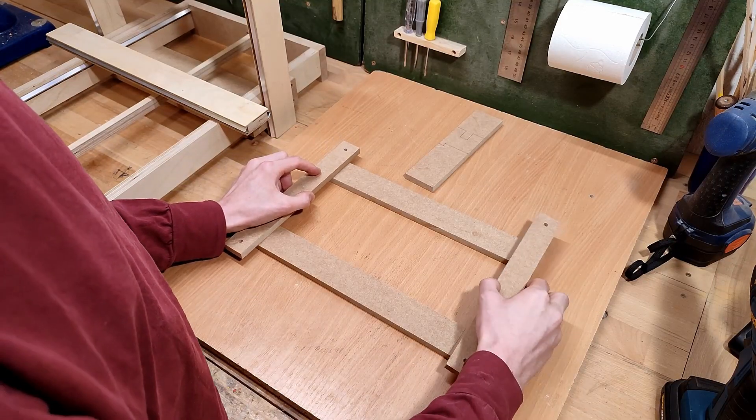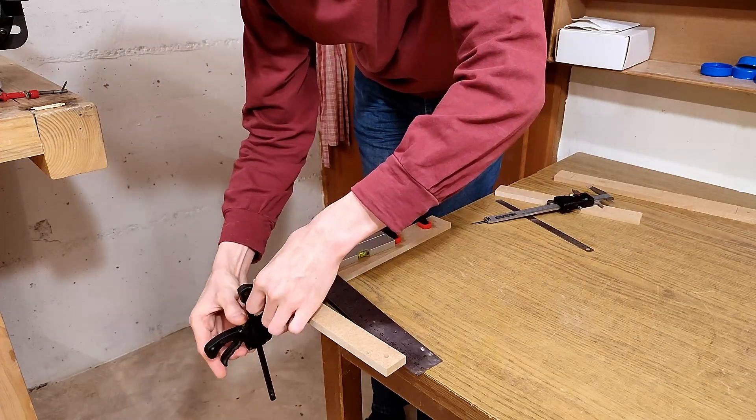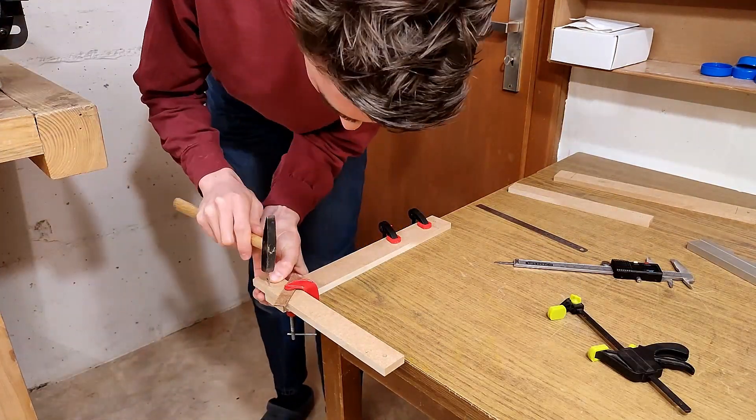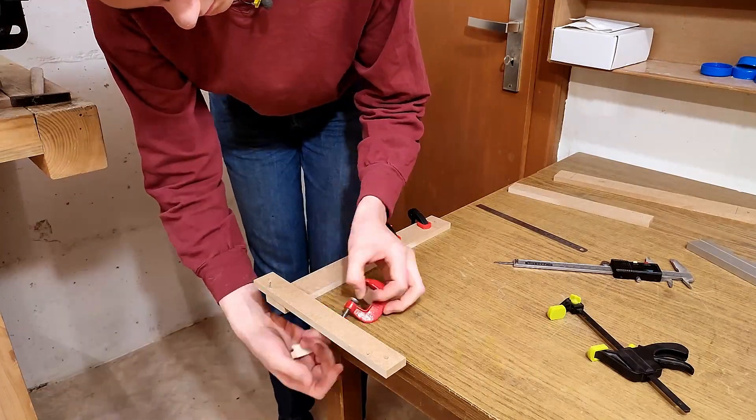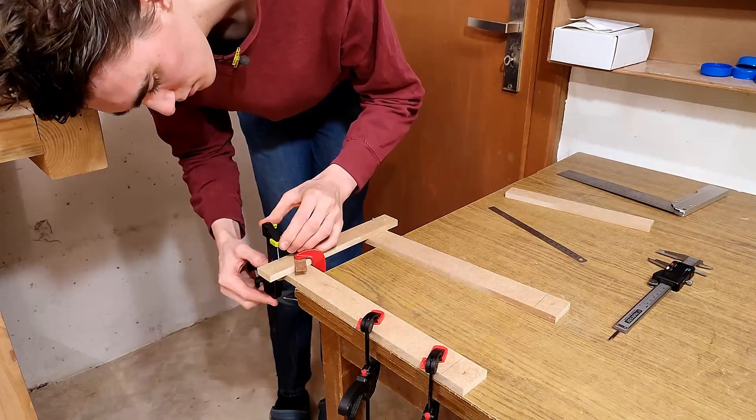Next, I need to glue these together like so, and to get everything properly lined up, I'm doing a dry fit first, pre-drilling some holes for small nails to sort of act as alignment pins for when the glue is on. This prevents the parts from sliding out of alignment on the thin layer of glue between them when I apply the clamps.